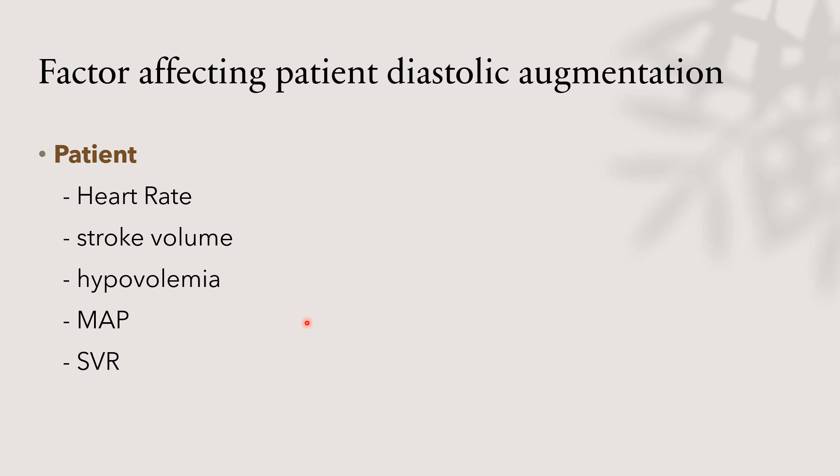So why do we have patients with suboptimal diastolic augmentation? What factors affect it? For diastolic augmentation, we have three factors: patient, catheter, and pump. For example, if a patient's heart rate is tachycardic, that will reduce left ventricular filling and shorten the time for balloon inflation. The second thing is stroke volume. Very low stroke volume means less volume ejected into the aorta. This volume displaces during diastole, and that means less augmentation. Also, if the patient is hypovolemic, or if mean arterial blood pressure is less than 40 mmHg, the augmentation will be very less. Systemic vascular resistance, severe vasodilation and vasoconstriction, all of this will affect proper diastolic augmentation.